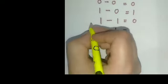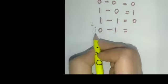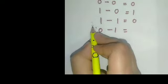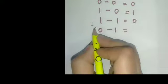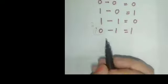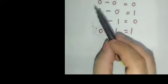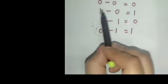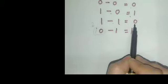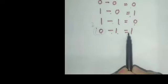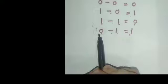Remember, 10 in binary means 2 in decimal. So 2 minus 1 equals 1. So we have these four rules: 0 minus 0 equals 0, 1 minus 0 equals 1, 1 minus 1 equals 0, and 0 minus 1 equals 1 where 1 was borrowed.